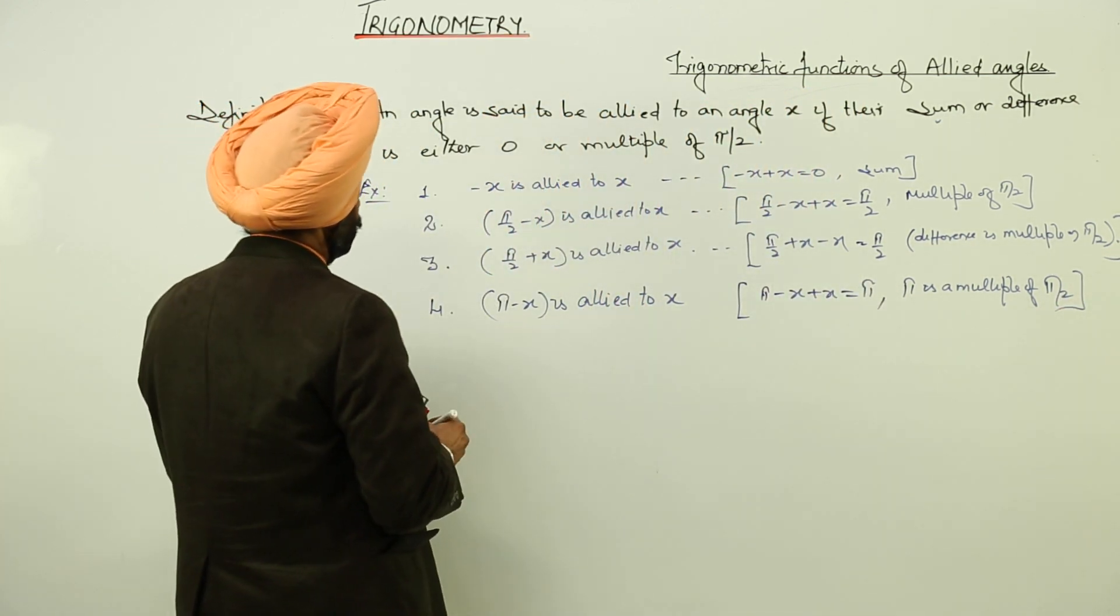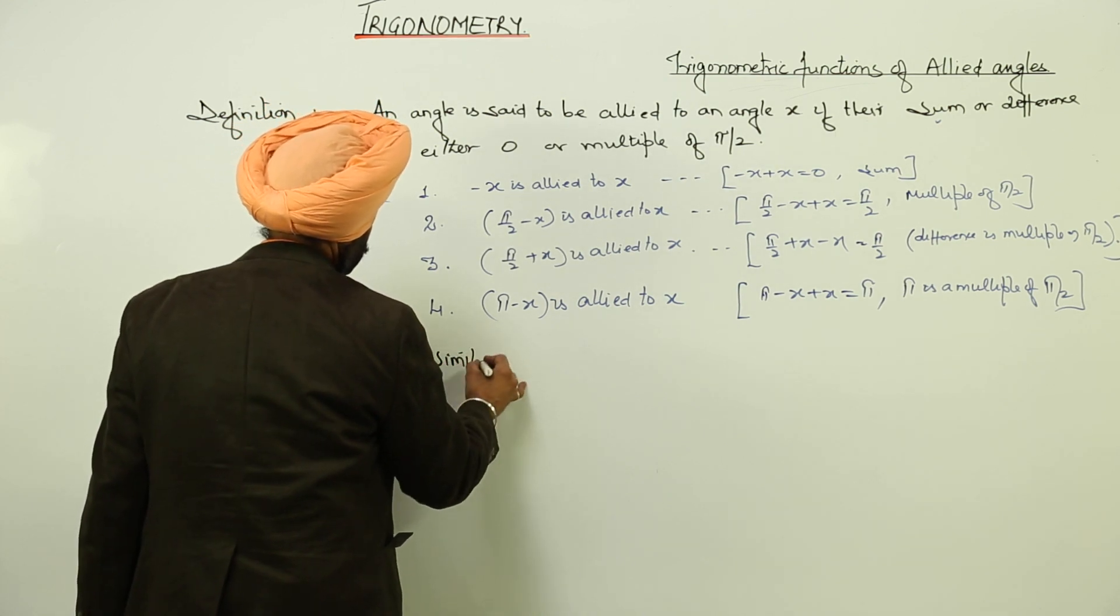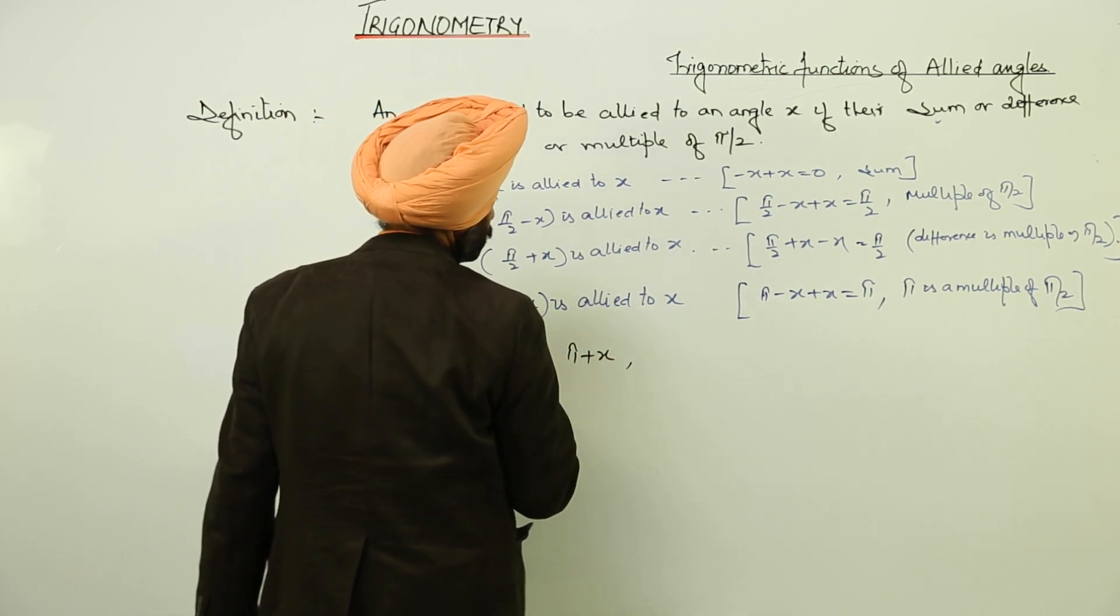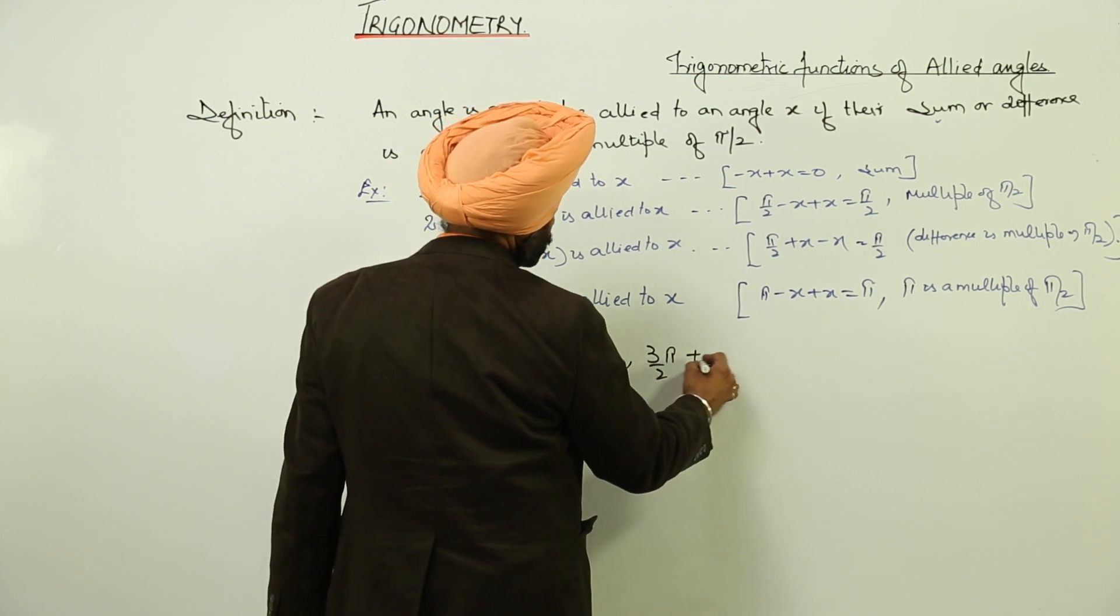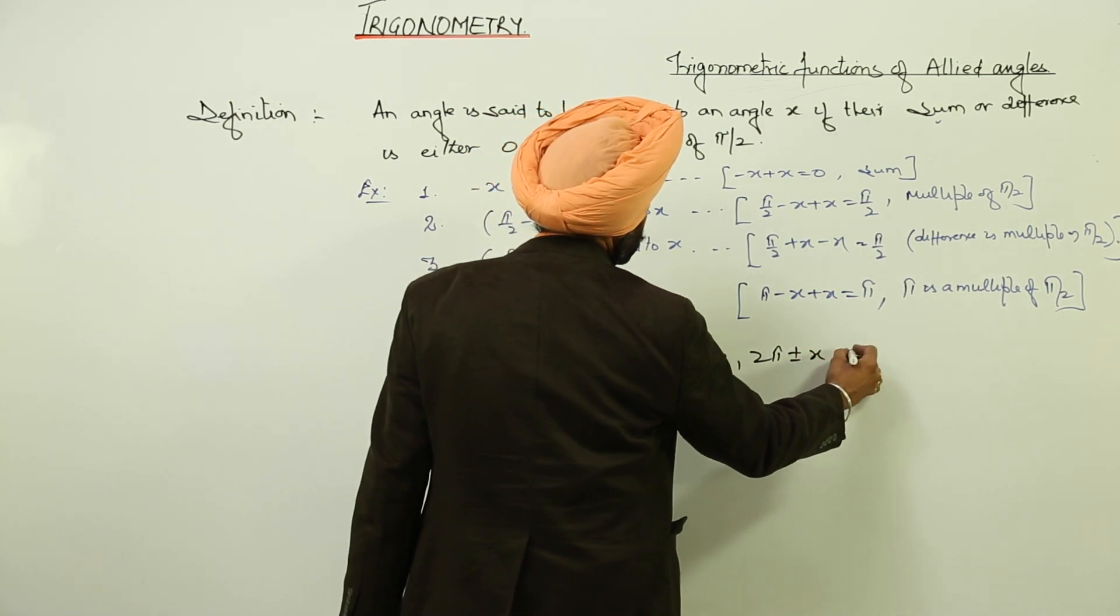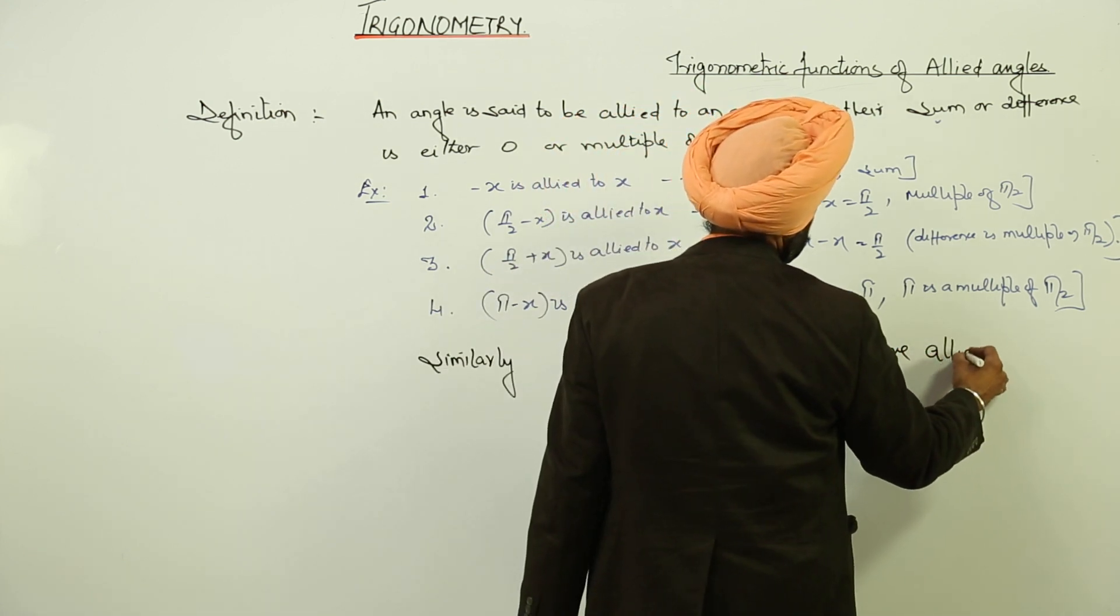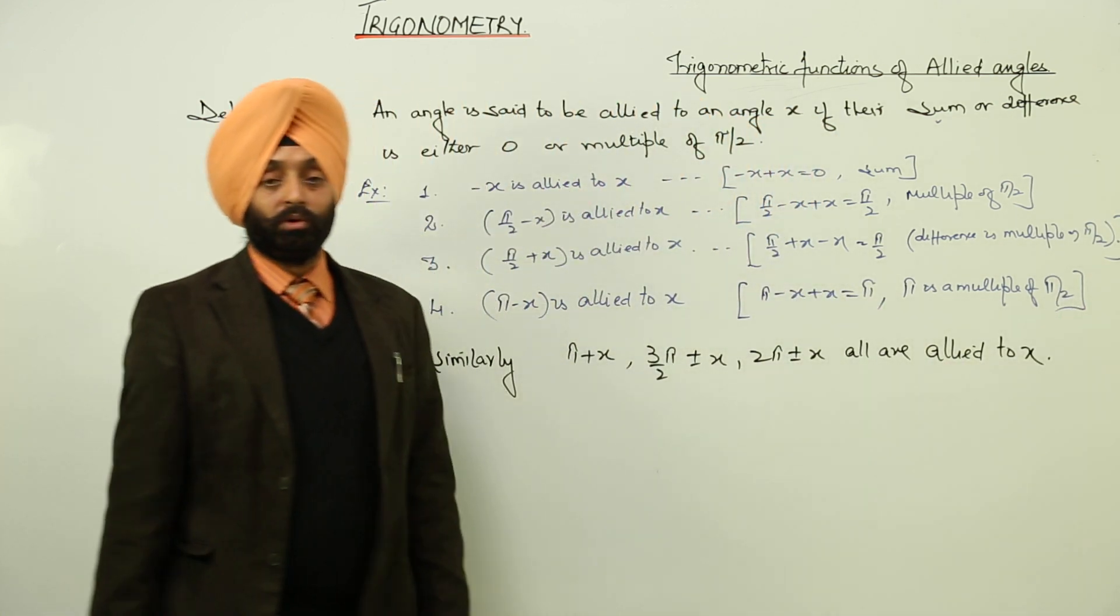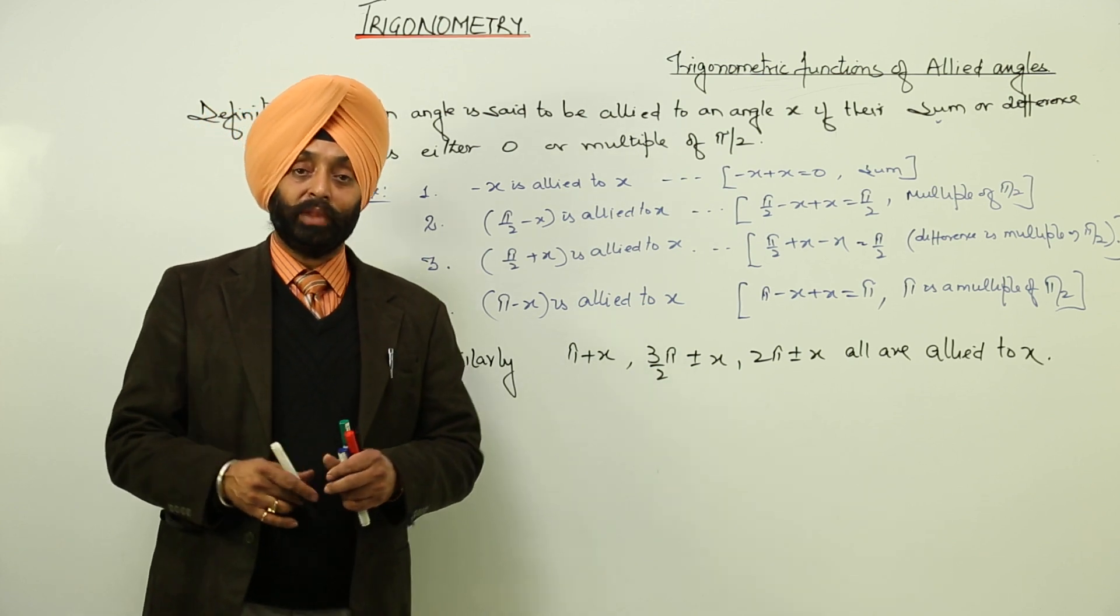Similarly, pi plus x, 3 pi by 2 plus minus x, 2 pi plus minus x all are allied to x. So, this was all about the trigonometric functions of the allied angles.